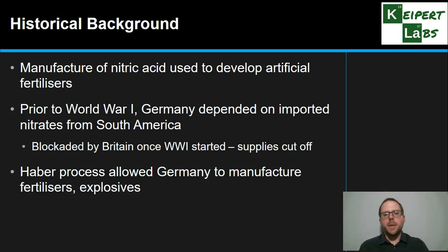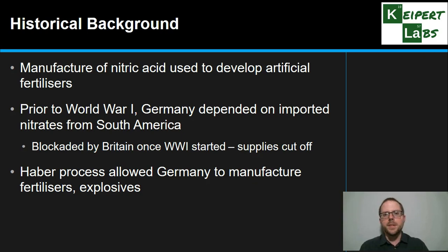Developing the Haber process — being able to produce ammonia and get this process going at home rather than relying on imported goods — meant that Germany was able to manufacture fertilisers and explosives. You can imagine that both of those things had significant impacts on the outcome of World War I. If Germany hadn't been able to produce explosives, its ability to re-arm its armed forces would have been severely limited. And its ability to feed that immense army through the use of fertilisers would be greatly diminished. So having access to this meant that Germany's efforts in World War I were greatly increased and prolonged.